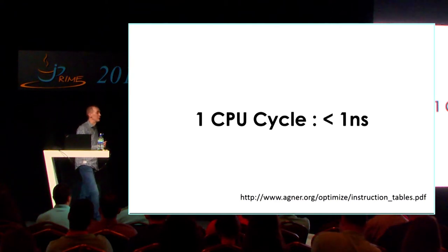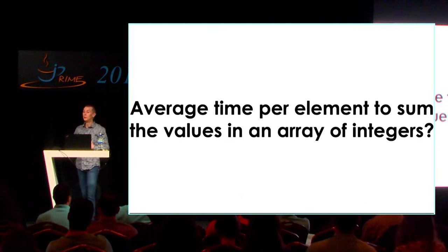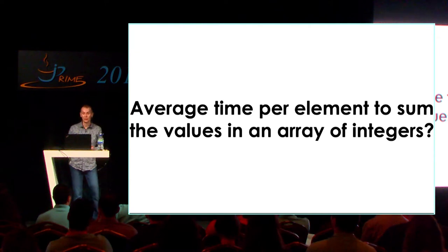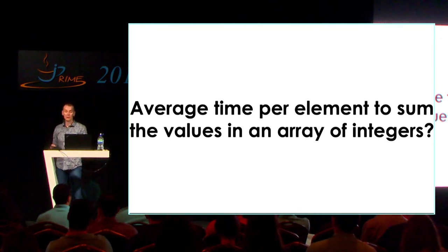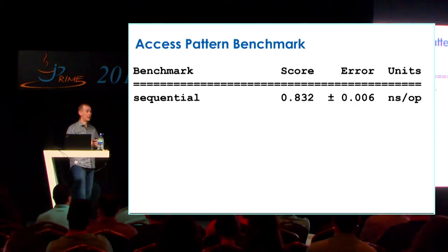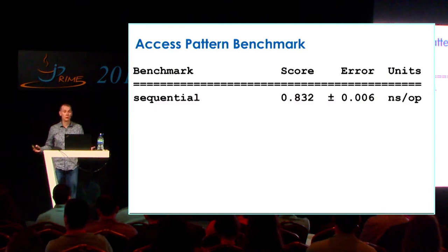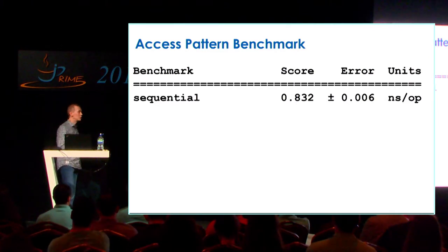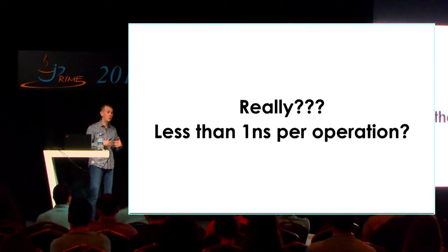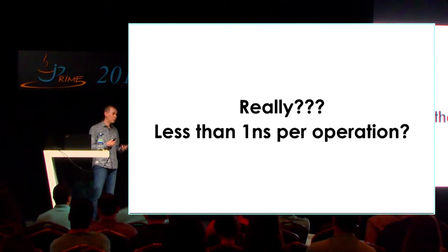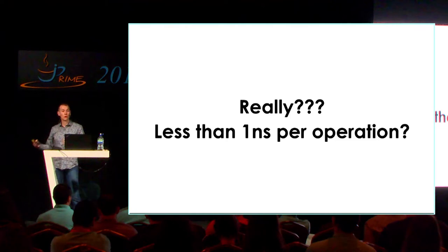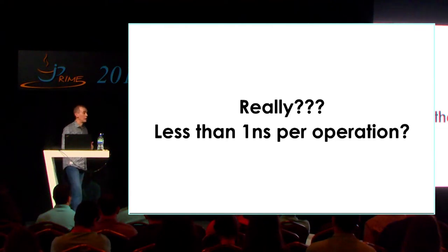How about if we're going to add up all of the elements in an array of integers — sum them all up — what is the average time per operation? If I go through the array sequentially and add everything up, it actually takes less than one nanosecond per element. That seems really very short. To do the operations, you've got to go through the array, load the next element into a register, sum it to the previous value, increment on to the next thing — multiple steps even per element.